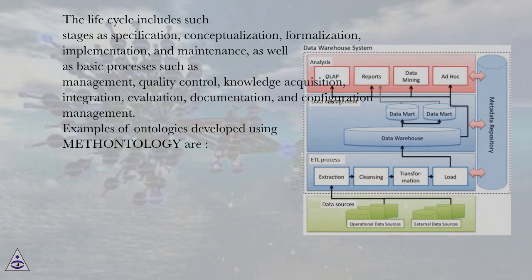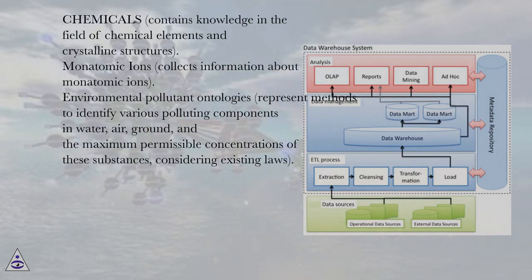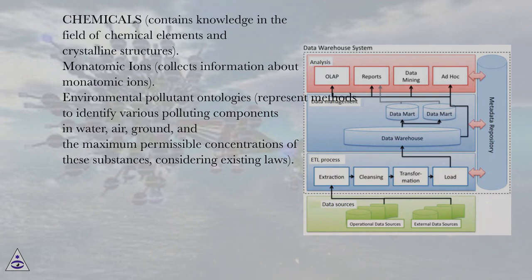Examples of ontologies developed using this methodology are: Chemicals, which contains knowledge in the field of chemical elements and crystalline structures; Monatomic Ions, which collects information about monatomic ions; and Environmental Pollutant Ontologies, which represent methods to identify various polluting components in water, air, and ground, and the maximum permissible concentrations of these substances considering existing law.